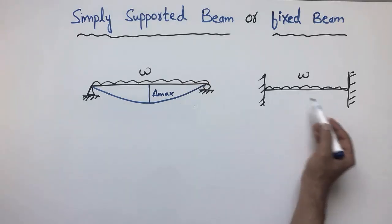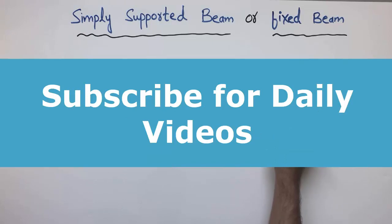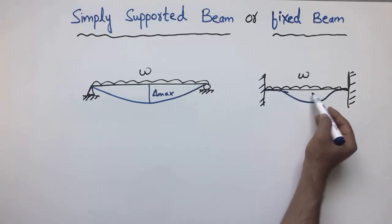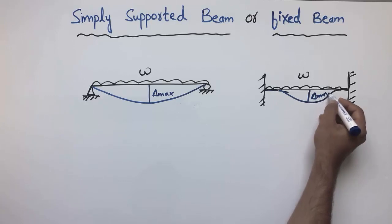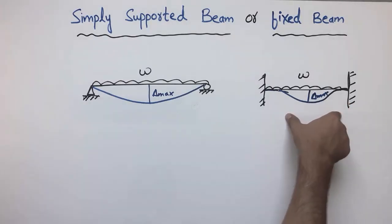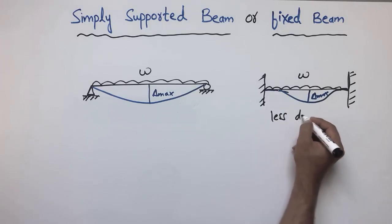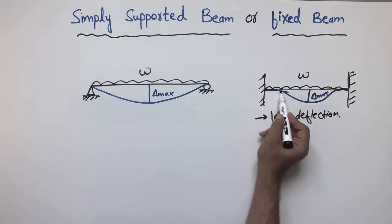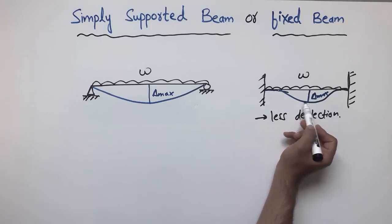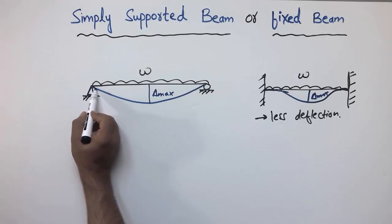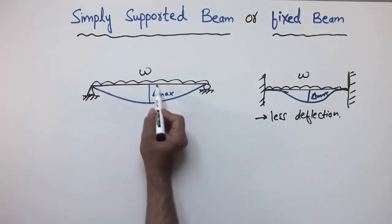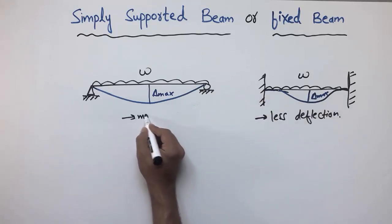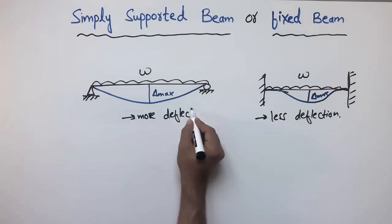The maximum deflection in the simply supported beam is represented as delta maximum. In the case of the fixed beam, we don't have any deflection at the two ends, but we will have deflection at the middle, also represented as delta maximum. However, in the fixed beam we have less deflection because of the fixed supports — deflection starts later and at the midpoint is less than that of the simply supported beam.